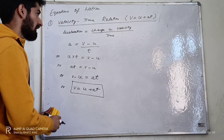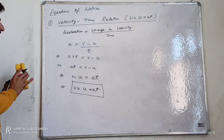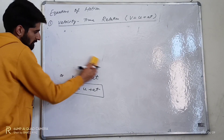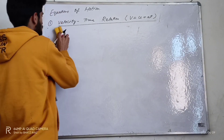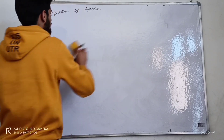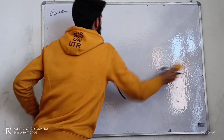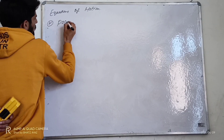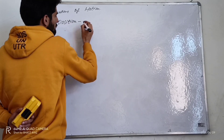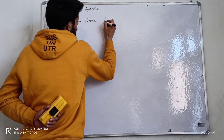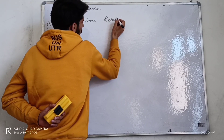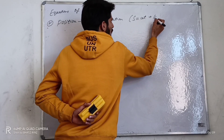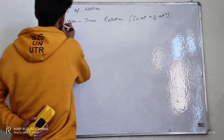Now we will go on to derive the second one, that is the position-time relation, and that is s is equal to ut plus one half at squared. We have to derive this equation.